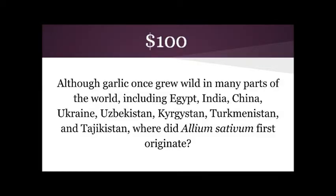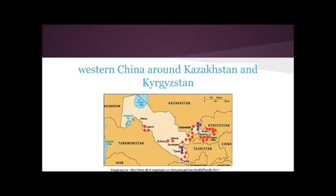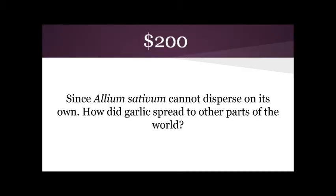Biogeography for 100: Where is western China, around Kazakhstan and Tajikistan? Biogeography for 200: What is the spice trade route and Silk Road that moved garlic from Central Asia to the Mediterranean and then to Sub-Saharan Africa and the Americas?